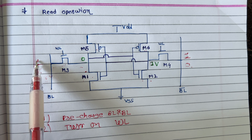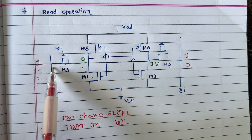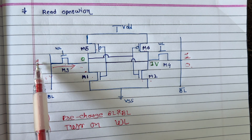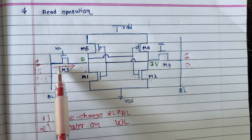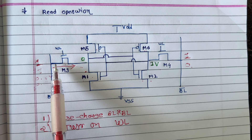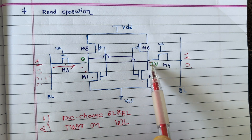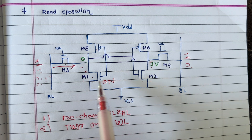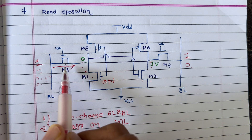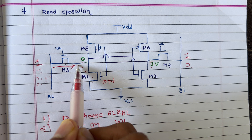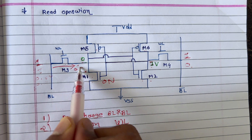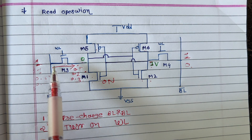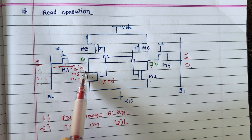But here, we have 1 here and 0 here, so a transition will happen through this path in READ operation. We want to read this 0. Ideally 1 is here, so as soon as we turn on the word line, this 1 will discharge through this path. Since we have 1 volt here, M1 is on because 1 is at its gate. So the 1 coming here will start charging the node storing 0 — 0.1, 0.2, 0.3 — but since M1 is also turned on, whatever potential is coming here, it is discharging through this path.